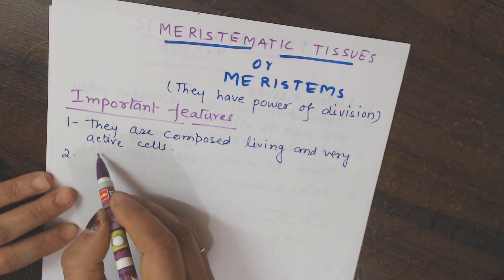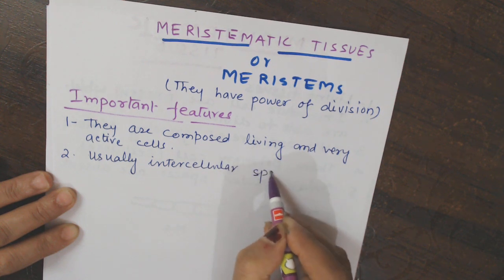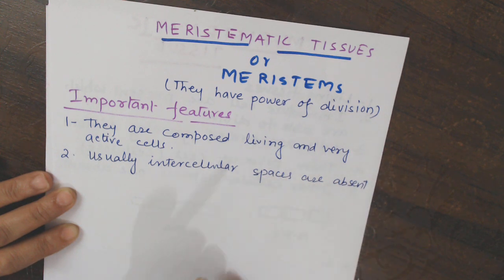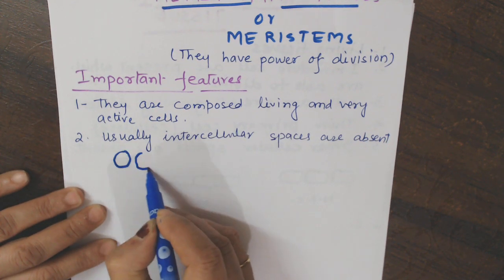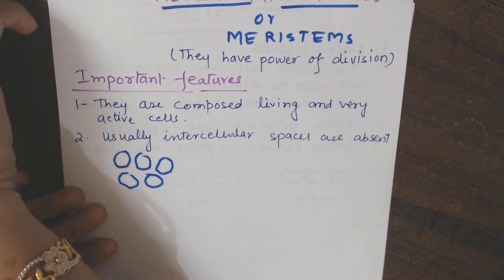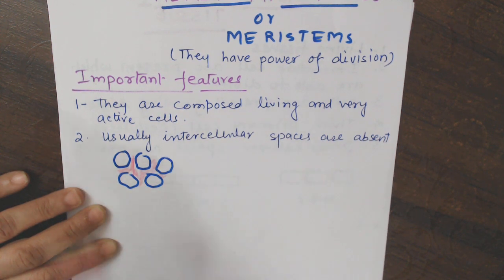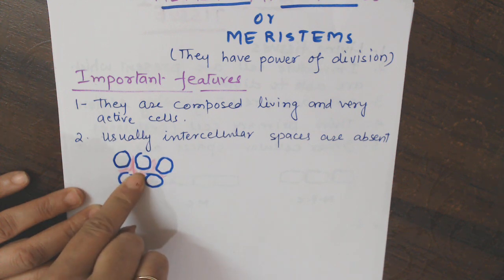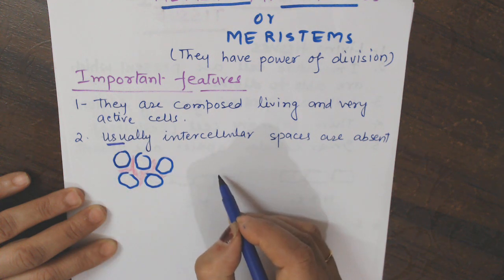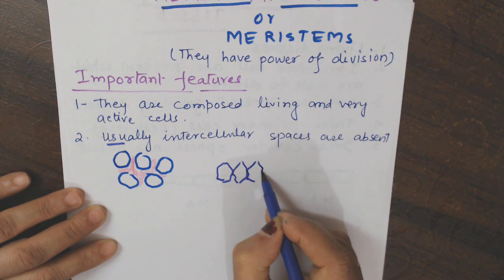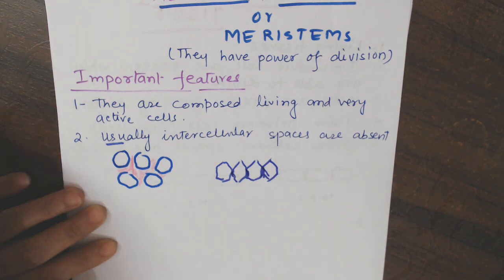Usually intercellular spaces are absent. Intercellular spaces are the spaces present between the cells. In other tissues you can see a gap between cells — that gap is the intercellular space. But in meristematic tissues, there is no gap, so usually intercellular spaces are absent.